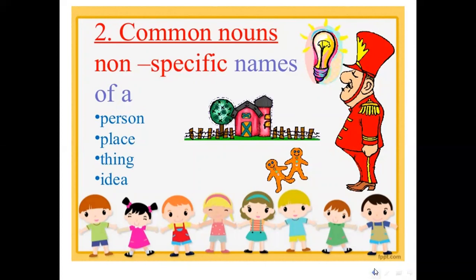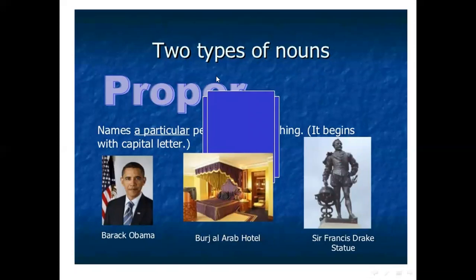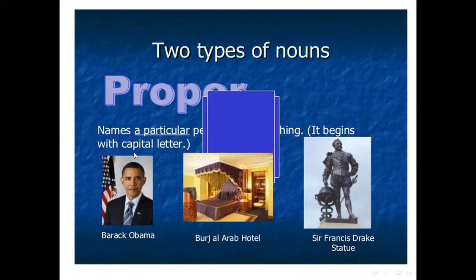I hope you understand noun and common noun in detail. Now the second type of noun is the proper noun. A proper noun is the name of a particular person, thing, or place, and it always begins with a capital letter. Keep this in mind. Nouns have two types: common nouns and proper nouns. A proper noun names a particular person, place, or thing, and begins with a capital letter.